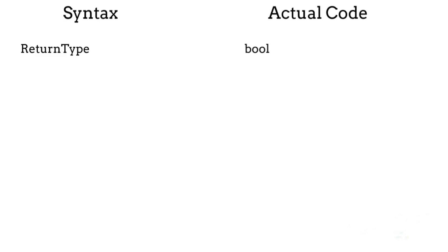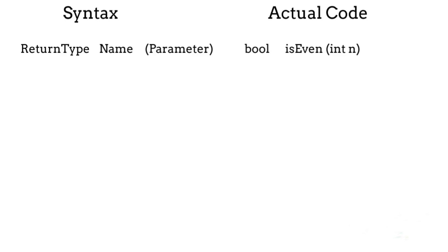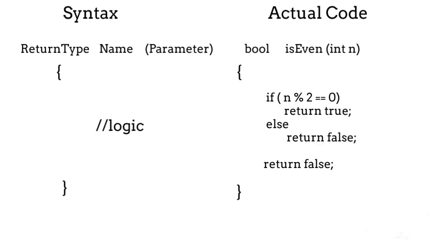In our problem, if the number is even we will return true, and if the number is odd we will return false — so the return type of our function is boolean. After the return type comes the name of the function. We will name it isEven. After the name we have parentheses which contain the parameters. The parameter is also called the input to the function — we will give input as an integer number for checking if the number is even or odd.